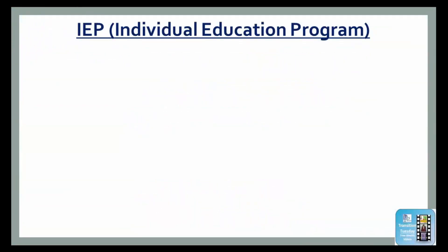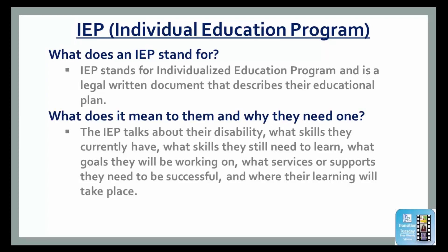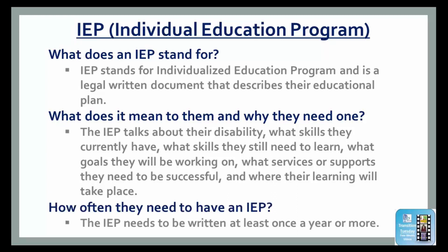To teach your students about their IEP and IEP meetings, start by explaining what an IEP stands for — an Individualized Education Program — that is a legal written document describing the educational plan for them, and then talk about what it means to them and why they need one. The IEP talks about their disability, what skills they currently have, what skills they still need to learn, what goals they will be working on, what services or supports they will need to be successful, where their learning will take place, and how often they need an IEP, which is written at least once a year or more.